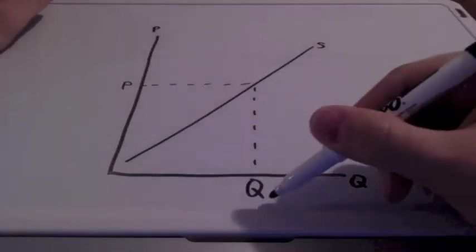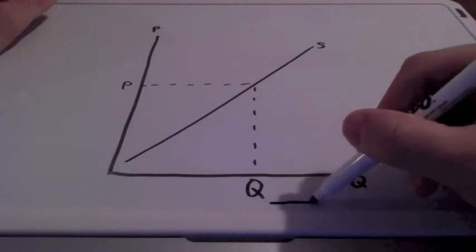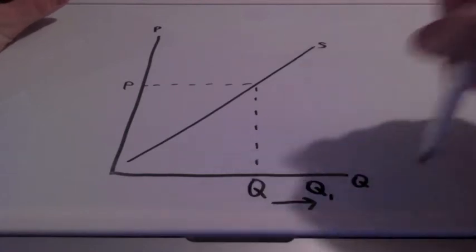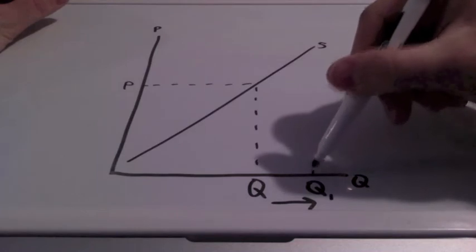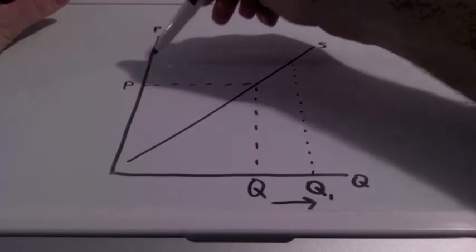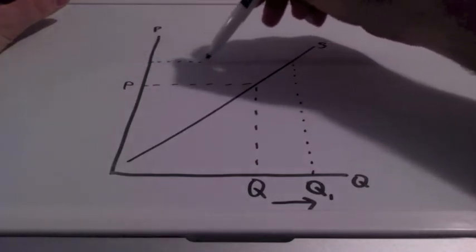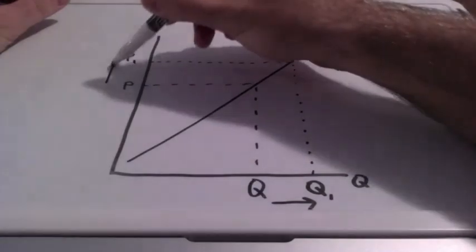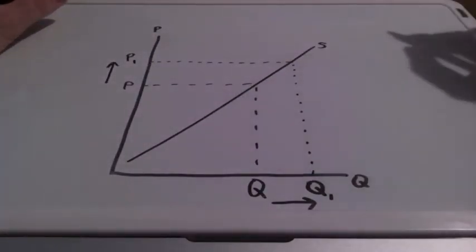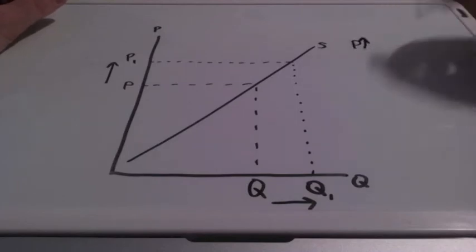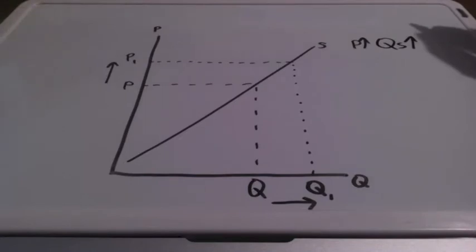So if we want to move our production, our quantity, to the right, we want to increase it. Bring this up to our supply curve. It's going to cost the firm more money. So associate price with cost. Price will go up, meaning costs will also increase in order to increase the quantity supplied of a good.